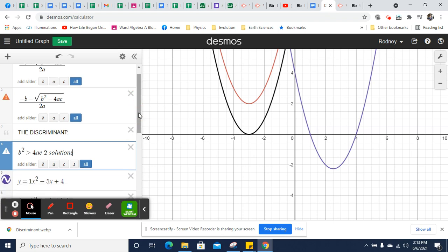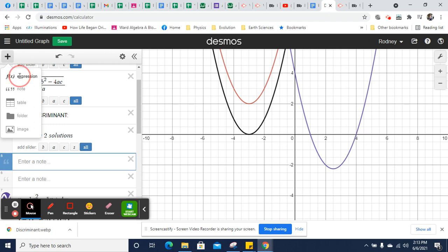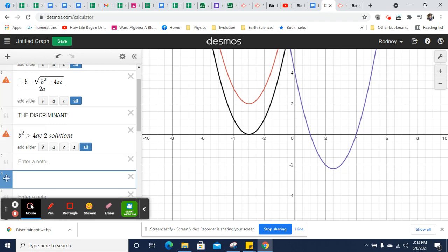If, on the other hand, I have b squared equals 4ac, I'm going to be doing same minus same. So b squared minus 4ac will equal zero. So I have one solution in that case.